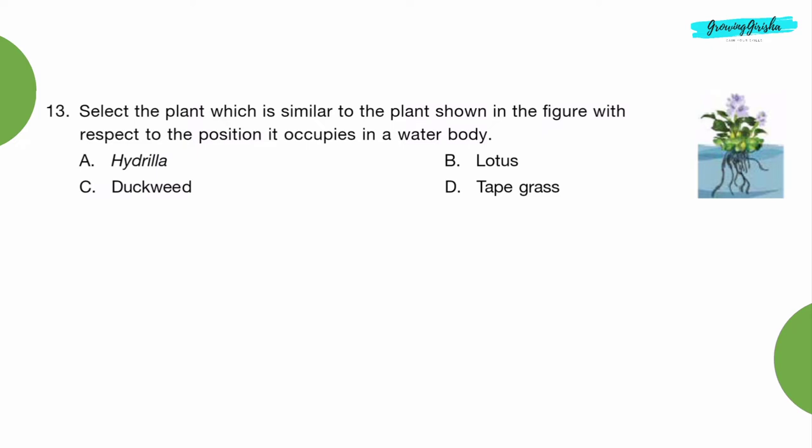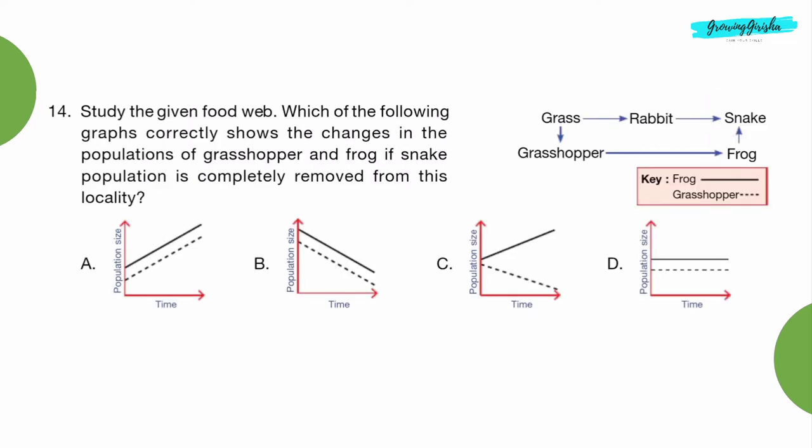Question 13: Select the plant which is similar to the plant shown in the figure with respect to the position it occupies in a water body. Option C: Duckweed. Question 14: Study the given food web. Which of the following graphs correctly shows the changes in the populations of grasshopper and frogs if snake population is completely removed from this locality? Option C.